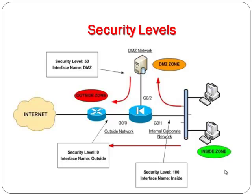Higher security level to lower security level: traffic originating from the inside interface of the security appliance with a security level of 100, destined for the outside interface with a security level of 0, follows this rule — allow all traffic, unless restricted by ACLs, authentication, or authorization.